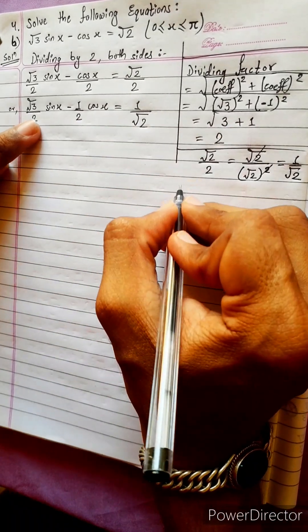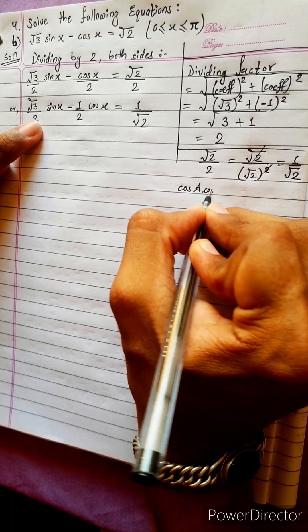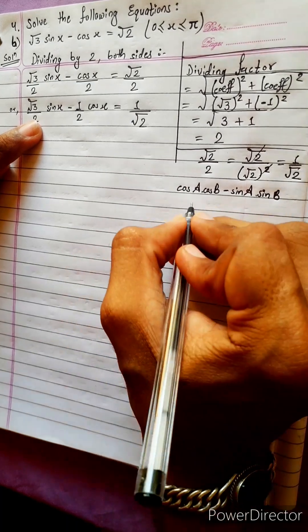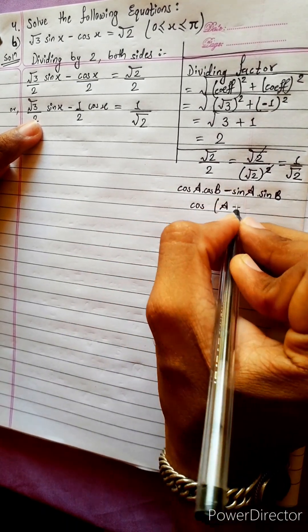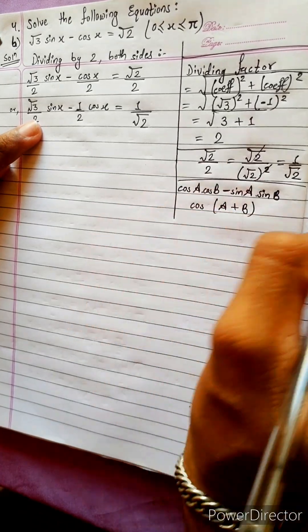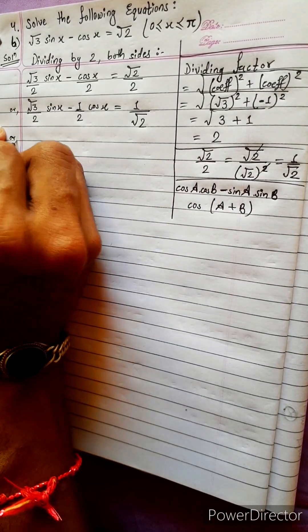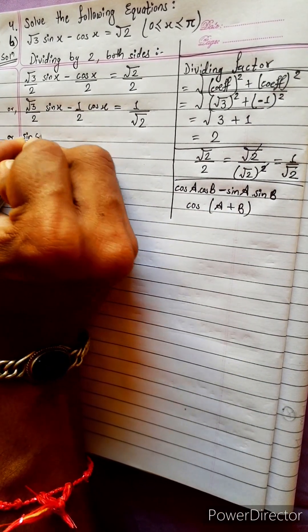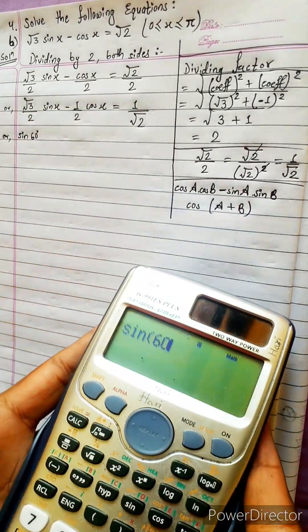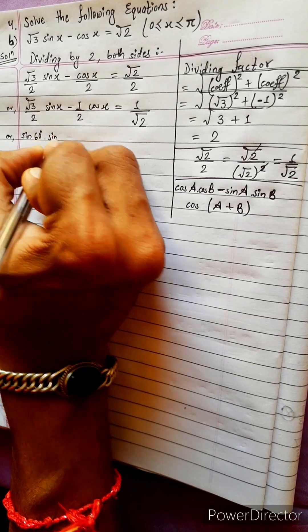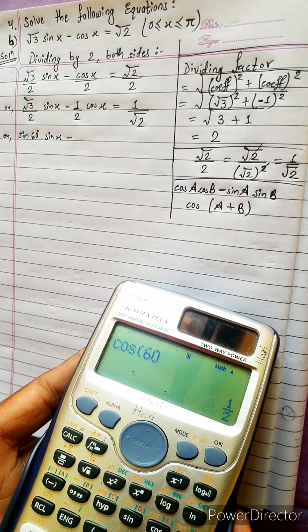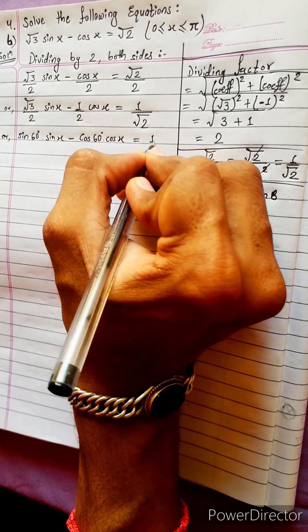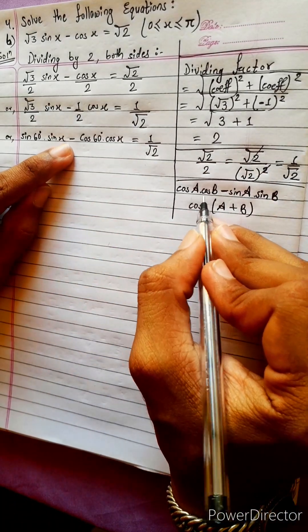Now we have one formula — the formula of cos: cos a cos b minus sin a sin b. Here is the formula. Here is the proof: sin 60 equals root 3 by 2. And cos 60 equals 1 by 2. So we will write here cos 60 degrees, and this as it is: 1 by square root 2. The formula is cos a cos b.